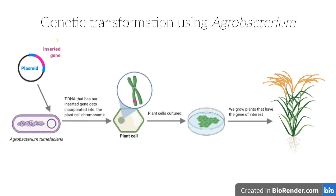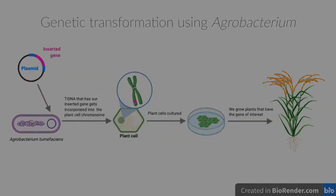First, we need to introduce our gene of interest — shown here in pink — into a DNA element called a plasmid that we engineered into the bacteria. Then we'll put the bacteria in contact with the mass of rice cells, and the Agrobacterium will transfer the gene we are interested in into the plant through its own natural process. From that mass of cells, we grow plants that hopefully have the specific traits we are looking for.